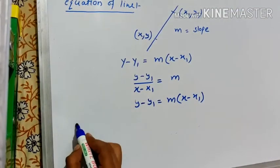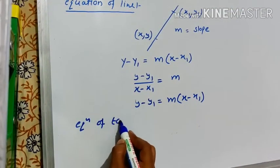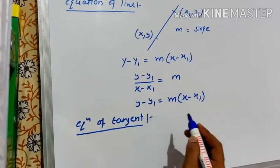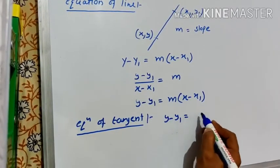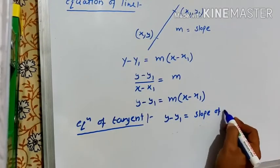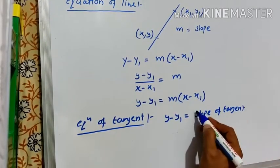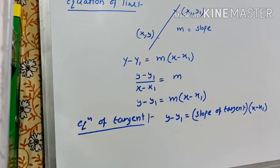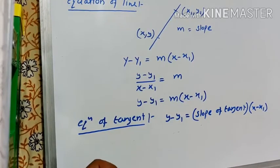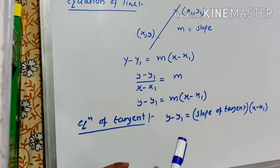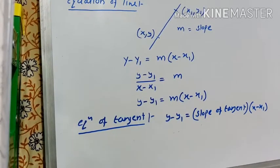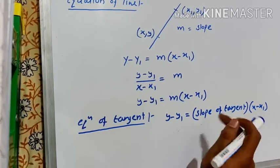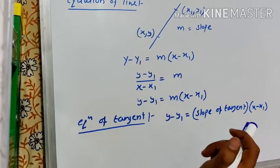Now equation of tangent: equation of tangent is y minus y1 is equal to slope of tangent into x minus x1. If I want to find the equation of any line, tangent is also a line. I need to find the slope and passing point. Now to find the tangent slope, and how to find it? The chapter is derivatives, so I need to use the derivative.